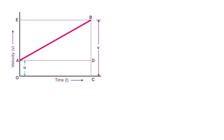Now since it is the graphical method, we need to plot a graph — a graph of velocity versus time. So as you can see here, velocity is on the y-axis and time is on the x-axis. An object has some initial velocity u and a final velocity v, and it takes time t to reach from initial velocity u to final velocity v.